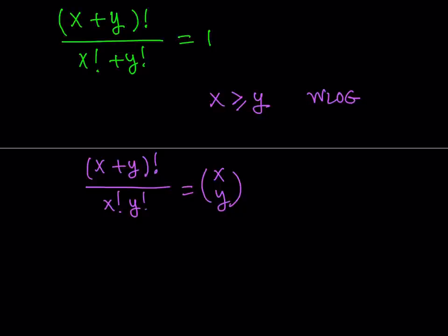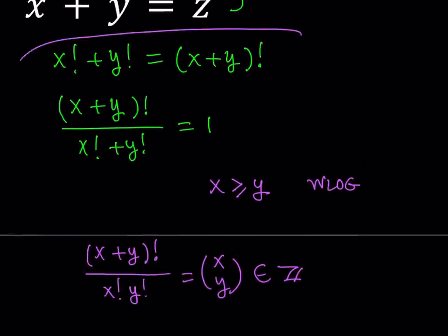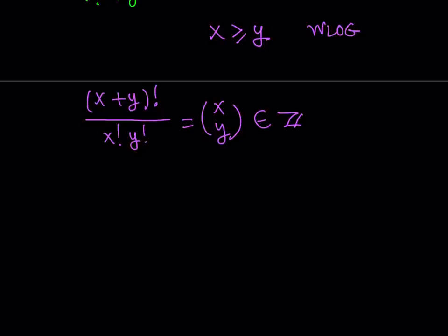In number theory, we use this fact a lot that x choose y is an integer if x and y are non-negative integers and x is greater than or equal to y. Now, in this case, we're talking about an integer here, but look at the left-hand side. Does that mean anything? No, not really. But here's the thing. If you go ahead and replace the numerator with something, it'll make sense. Well, since we know that x plus y factorial is equal to x factorial plus y factorial, we can just go ahead and do the replacement. x factorial plus y factorial divided by x factorial y factorial is equal to x choose y. Therefore, this is an integer.